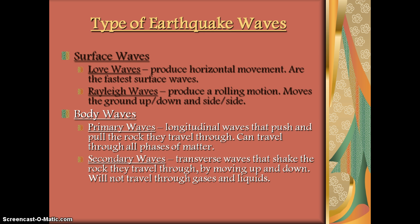The body waves, or the waves that travel through the Earth itself, are called P and S waves. P waves look like a slinky — you lay it on the ground and you push it side to side. That's how a P wave behaves. They are the strongest and fastest waves. S waves move up and down vertically, which makes them a weaker wave and they cannot travel through liquids.